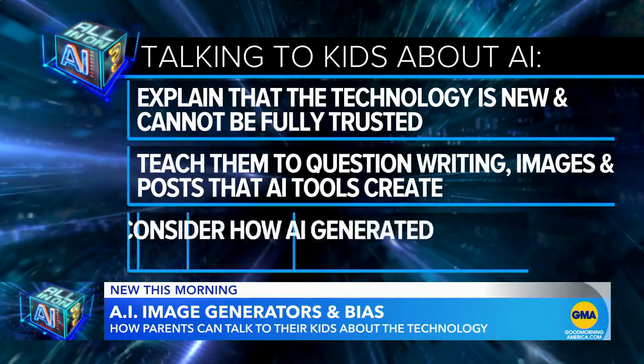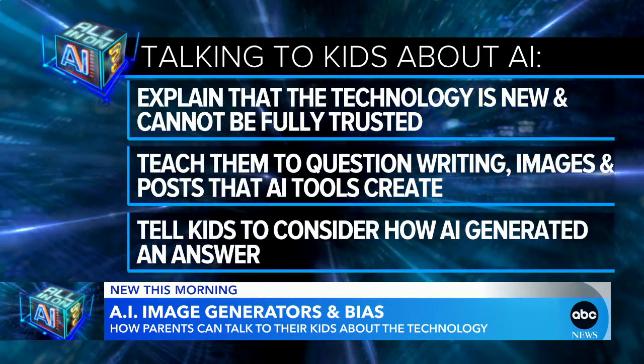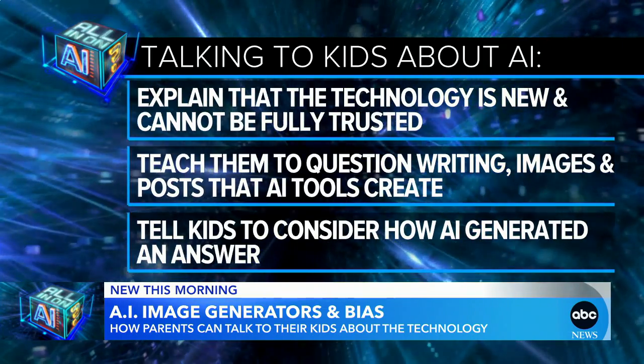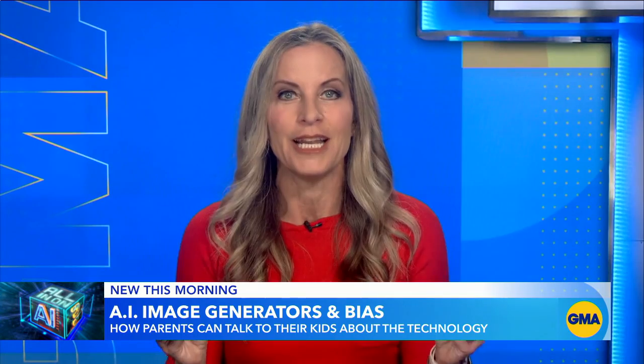The big takeaways for parents: tell your kids that image generators and tools like ChatGPT are really new — not established technology that can be fully trusted yet. Teach kids to question the writing, images, and posts that AI tools create. Common Sense says to ask your kids: 'How did AI come up with that answer? What information did it use?' They add that generative AI is currently better for fiction, not fact. On the issue of racism, because these AI tools use data that may have implicit bias baked in, the results will reflect that bias — and that's a bigger problem than just AI. It's a societal issue.